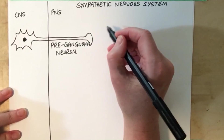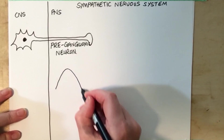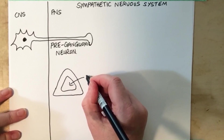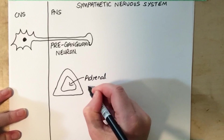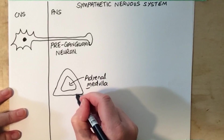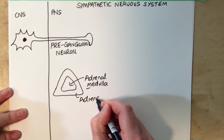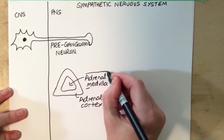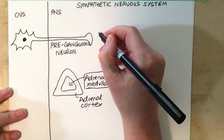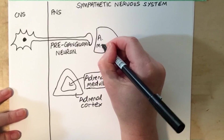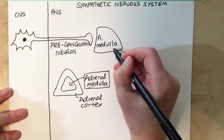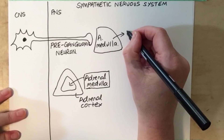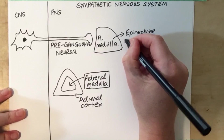If we take a cross-section look through the adrenal gland, we'll find it consists of two areas: a central medulla, the adrenal medulla, and the adrenal cortex. These synapses occur with the adrenal cells within the adrenal medulla. Upon stimulation of this gland, the cells will secrete two hormones: epinephrine and norepinephrine.